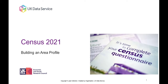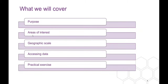Today we're going to talk about area profiles. We're in the middle of census releases, so some of this will be looking forward to what data we can expect to see later on. The practical element is really focusing on the topic summary tables that have been provided. There are a couple of practical elements depending on how time goes. So first: the purpose of today, the kind of information available in the census, the scale at which you can look at it, and then a practical exercise of accessing data.